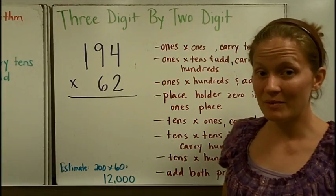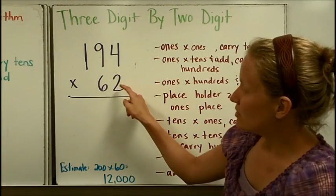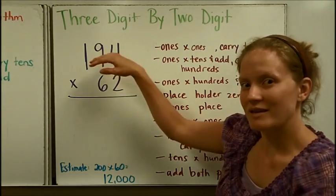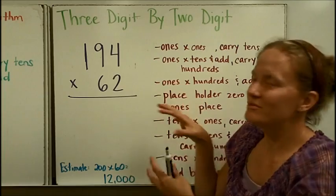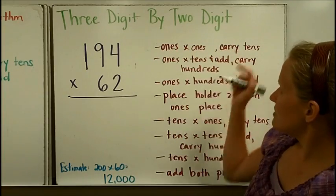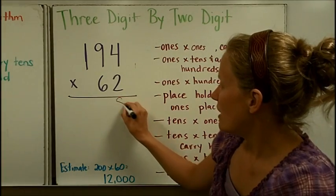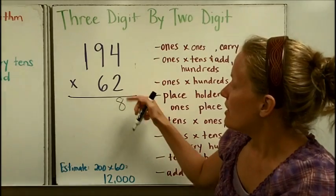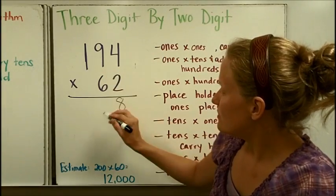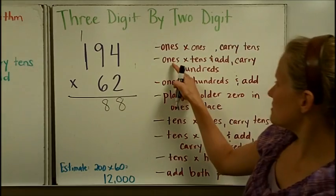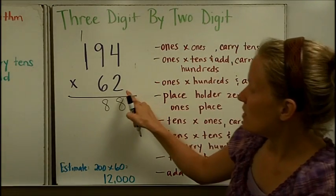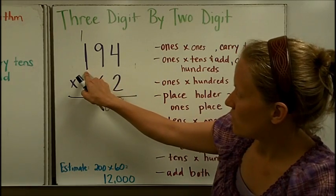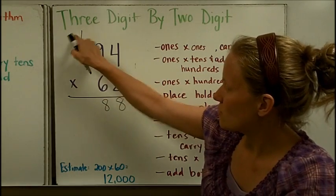Next, we're going to do a 3 digit by 2 digit problem. And it's going to look a lot like I'm combining the 3 times 1 and what I did with the 2 times 2, putting all those steps together. Do the ones times ones and carry the tens. So, I'm going to do 2 times 4, and it says carry the tens. Well, 2 times 4 is 8. There are no tens to carry. Next, I'll do 9 times 2 is 18, and I'll carry the hundreds. So, that was ones times tens and add, carry the hundreds. Now, I'm going to do the ones times hundreds and add. 2 times 1 is 2, plus 1 is 3.